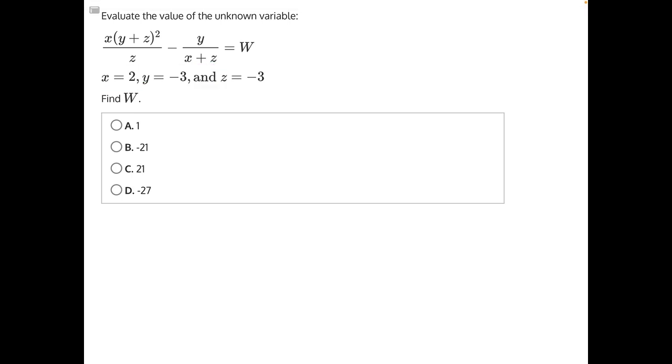Let's start by making those substitutions. We have x, which is equal to 2, times y, which is equal to negative 3, plus z, which is also equal to negative 3. And all of that is squared over z, which is negative 3, minus y,